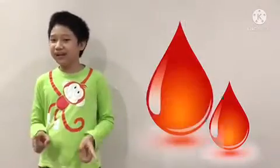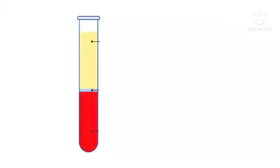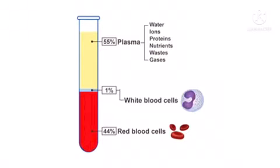Let's talk about the blood first. Blood is a fluid that consists of red blood cells, plasma, white blood cells, and other things. It mainly consists of plasma, which is the medium that your red blood cells float around in.